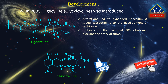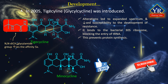Like minocycline, tigecycline binds to the bacterial 30S ribosome, blocking the entry of transfer RNA, which ultimately prevents protein synthesis and thus inhibits bacterial growth. However, the addition of an N,N-dimethylglycylamido group at the ninth position of the minocycline molecule increases the affinity of tigecycline for the ribosomal target up to five times when compared with minocycline or tetracycline, allowing for expanded spectrum of activity and decreased susceptibility to resistance. While tigecycline was the first tetracycline approved in over 20 years, other newer versions are currently in human clinical trials.